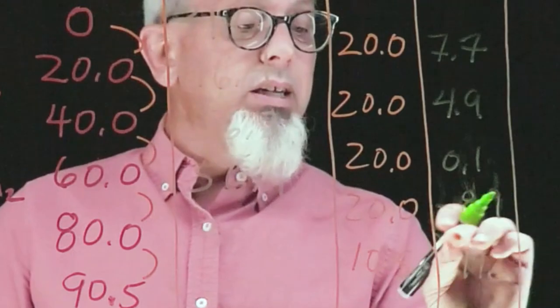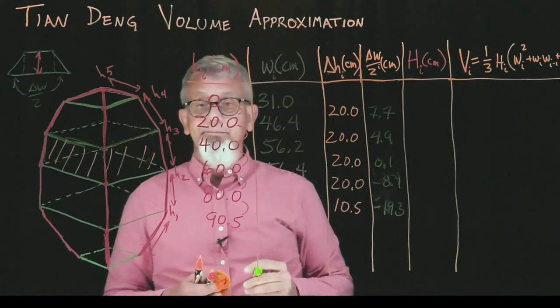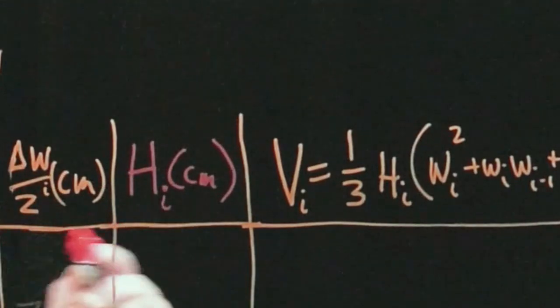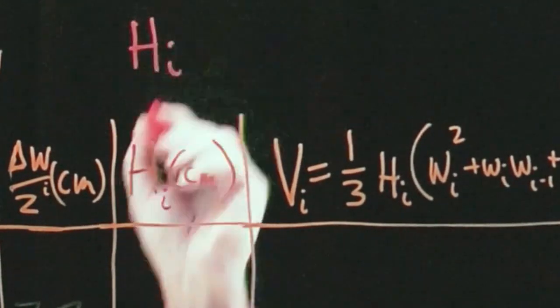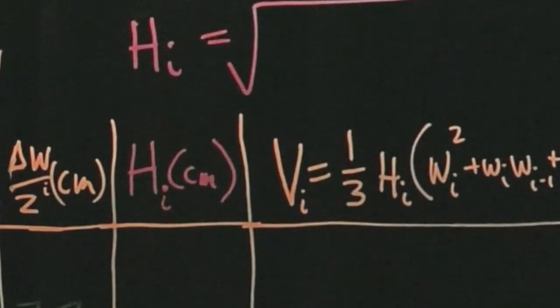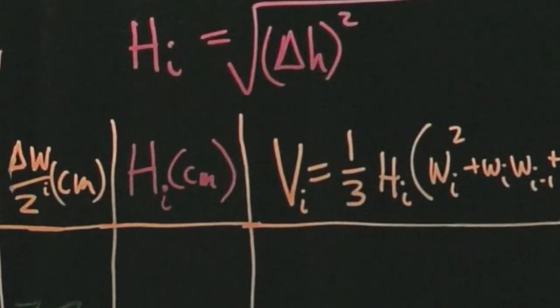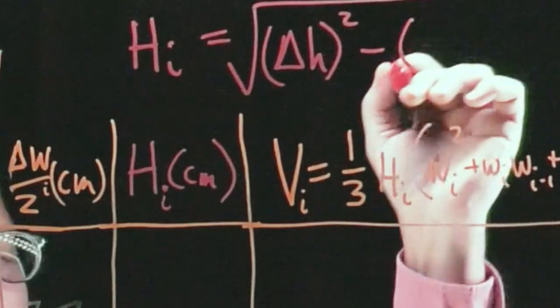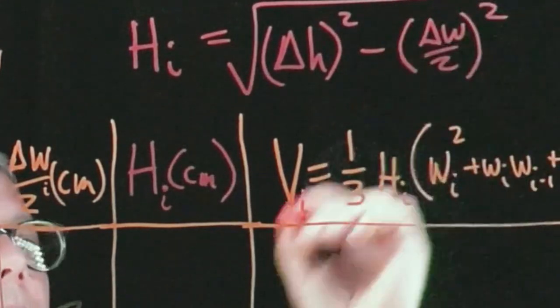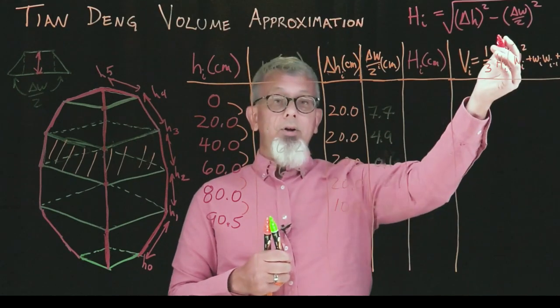The formula we have for this height uses the Pythagorean theorem. We're basically going to take the square root of this delta H squared and subtract off the square root of this delta W over 2 squared. Since we've calculated each of those separately, we just need to go ahead and do the math.